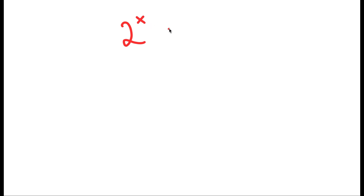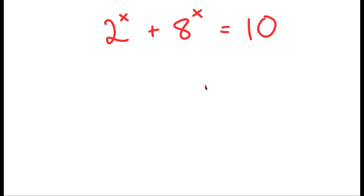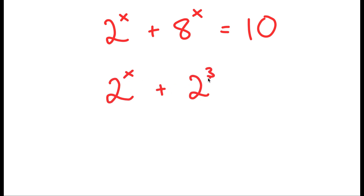In this video, I'm going to solve the equation 2 to the power of x plus 8 to the power of x is equal to 10. To solve this, I'm going to first start by rewriting 8 as 2 to the power of 3. So I get 2 to the power of x plus 2 to the power of 3 to the power of x is equal to 10.